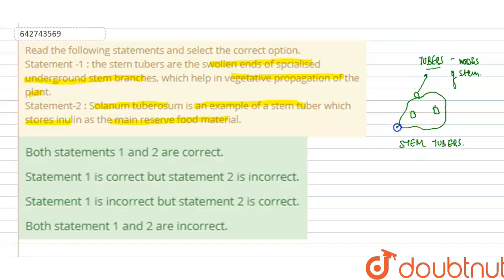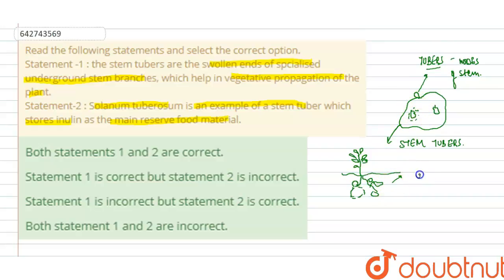When you plant this potato under the ground inside the soil, a new plant will emerge from these tubers, and again we will get a new plant of the potato and new potatoes will be formed. So a new plant emerges from these tubers, hence it is helping in the vegetative propagation of the potato plant.